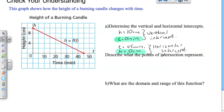Describing what the points of intercept represent: the vertical intercept represents the point where the height is 10 at time zero — so at the very beginning of burning the candle. As soon as we light the candle at time zero, the height is at 10. For the horizontal intercept, it's the point at which the height is zero — so theoretically, this is where the candle would be completely burnt. It takes 45 minutes for the candle to completely burn out.